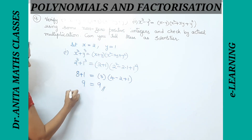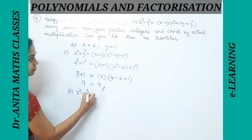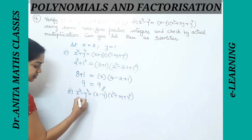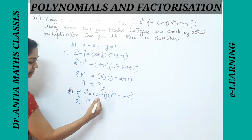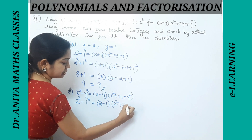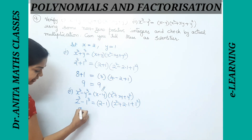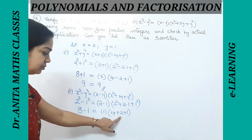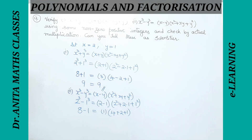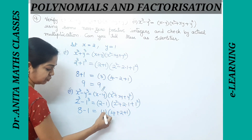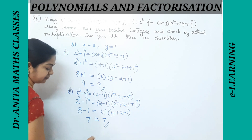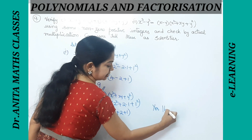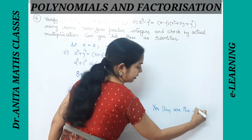Now verifying the second identity with x = 2, y = 1: LHS = 2³ − 1³ = 8 − 1 = 7. RHS = (2 − 1)(2² + 2·1 + 1²) = 1·(4 + 2 + 1) = 7. LHS = RHS = 7, hence verified. So yes, we can call these algebraic identities.